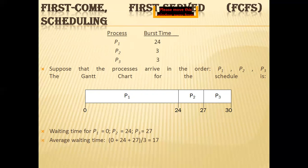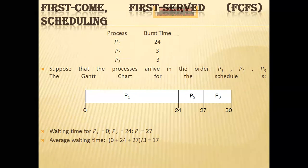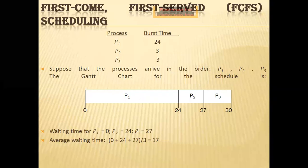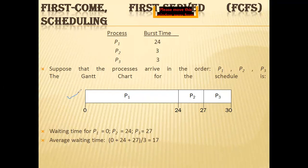By this example, I will explain how FCFS scheduling is implemented. Consider this example: we have three processes P1, P2, and P3, and their burst times are written. The unit of burst time is milliseconds. Process P1 requires 24 milliseconds, P2 requires 3 milliseconds, and P3 requires 3 milliseconds. This figure shown here is known as a Gantt chart.